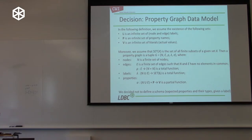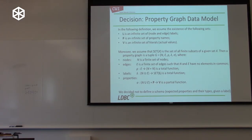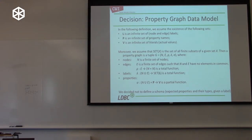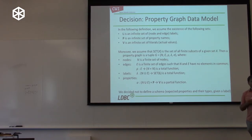Q: Why was the decision made to ensure that N and E are disjoint sets — that no node can also be an edge? A: That's definitely a difference with RDF. Apart from RDF systems, there are no property graph implementations that actually allow a node to also be an edge, so that's probably the answer. I was not the driver of that discussion, but I think that's the reason.